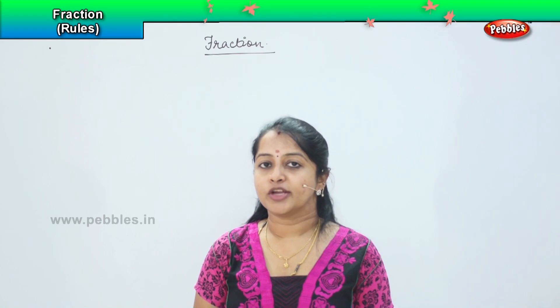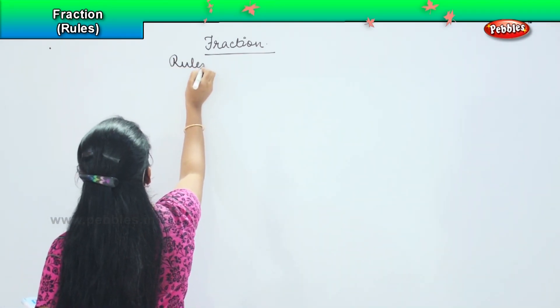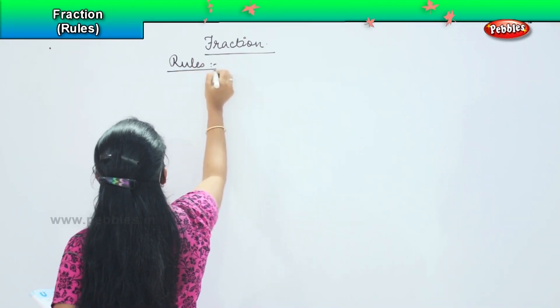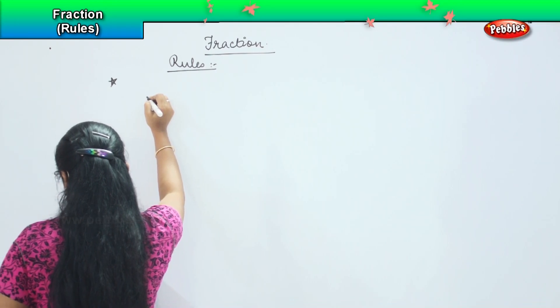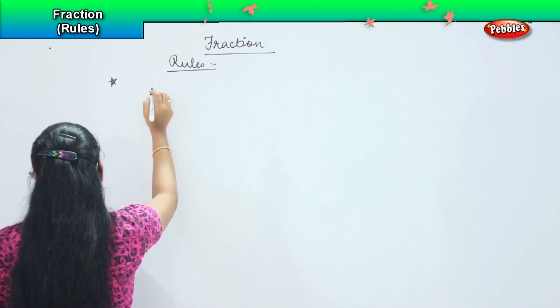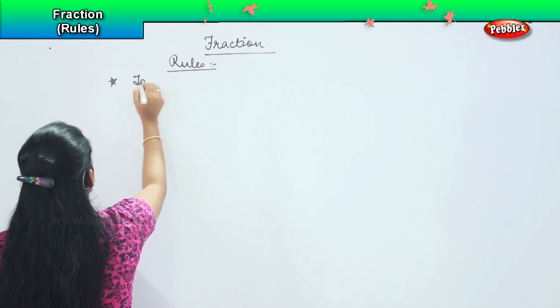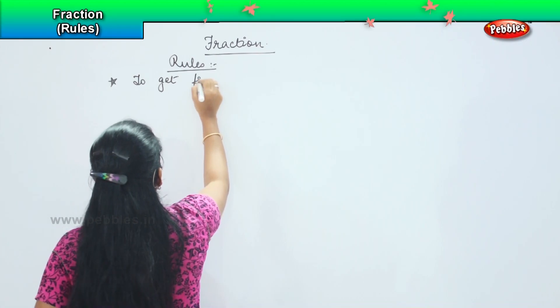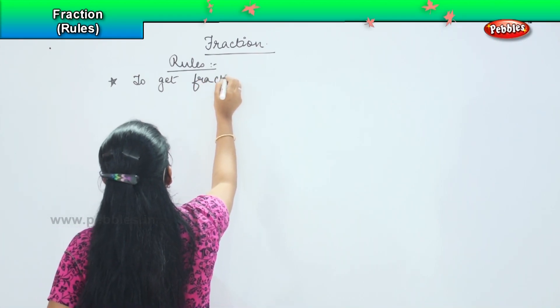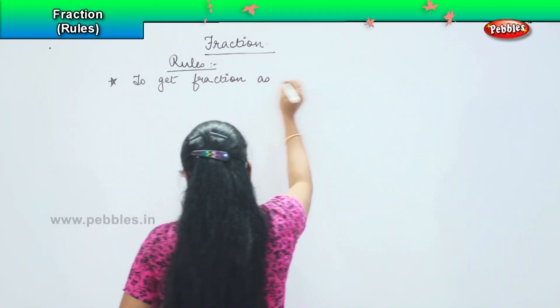So now children, I am going to tell you the rules of fraction. Coming to the first one, the first rule says to get fractions as equivalent.